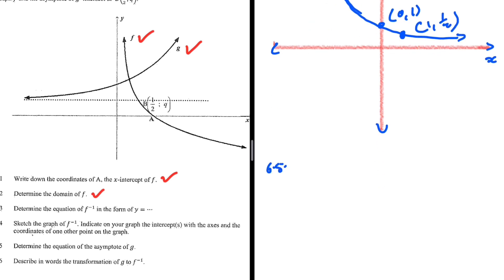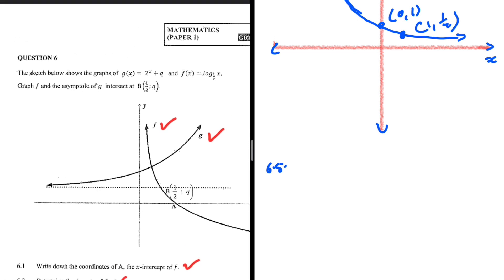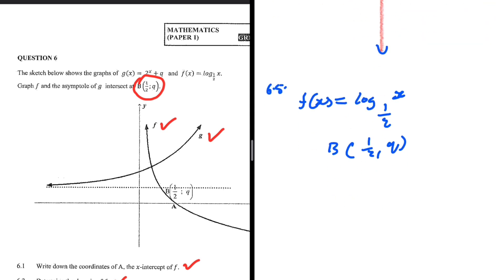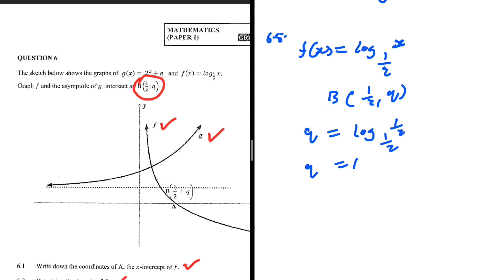6.5: determine the equation of the asymptote of g. The graph of f and the asymptote of g intersect at point b, so we can use f and point b to find the asymptote of g. f of x is log base one half of x. We substitute point b with coordinates (one half, q) to find q. We get q equals log base one half of one half, which equals 1. That is the asymptote of g.